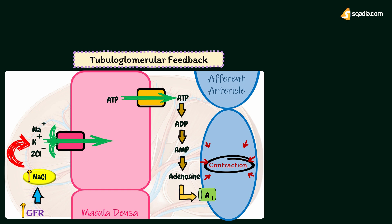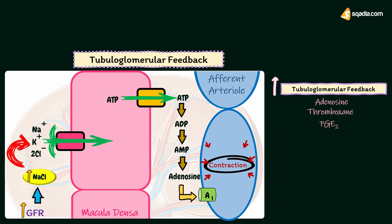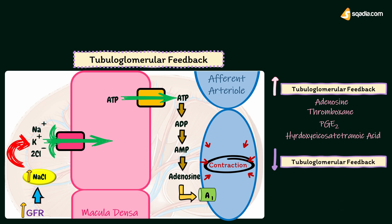There are several other factors which increase or decrease the sensitivity of tubuloglomerular feedback. Factors increasing sensitivity include adenosine, thromboxane, prostaglandin E2, and hydroxyeicosatrienoic acid. Factors decreasing sensitivity include atrial natriuretic peptide, prostaglandin I2, cyclic AMP, and nitric oxide.